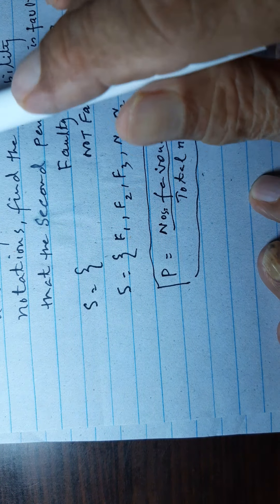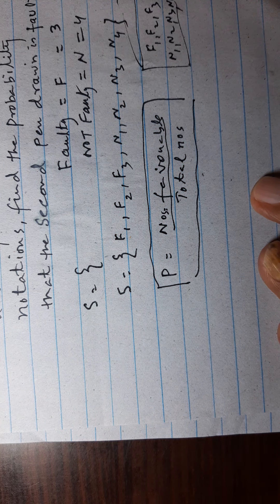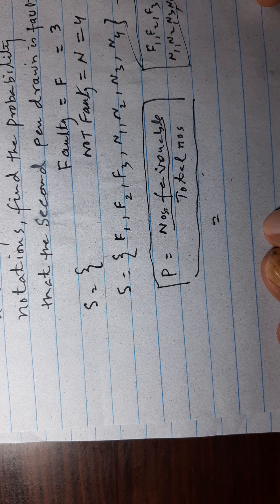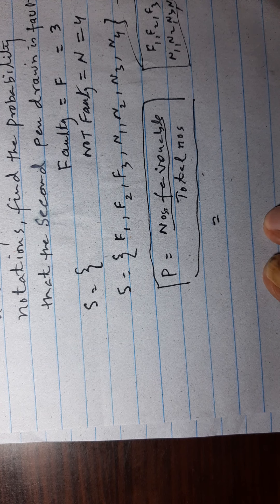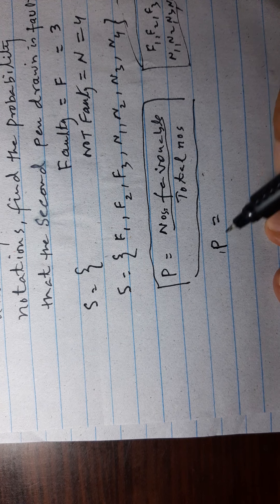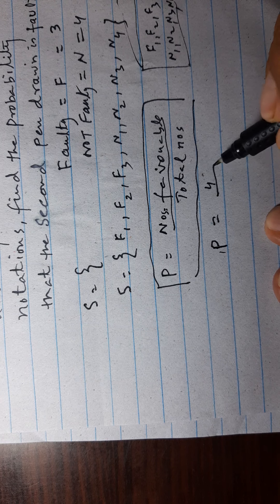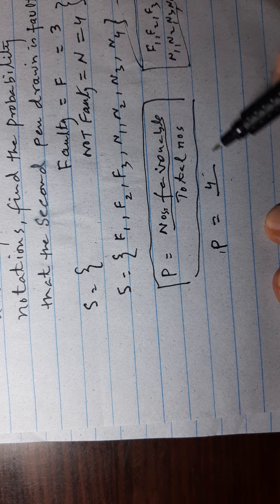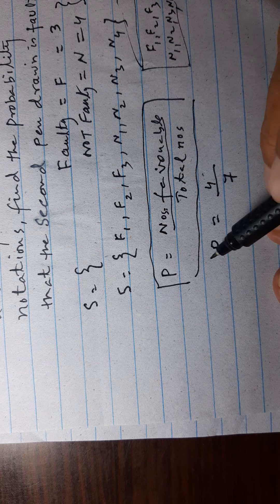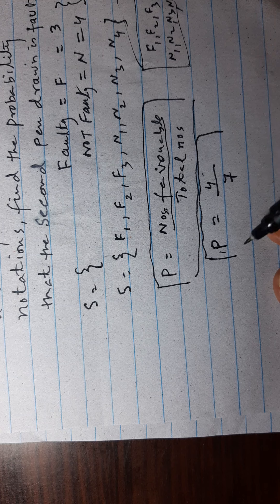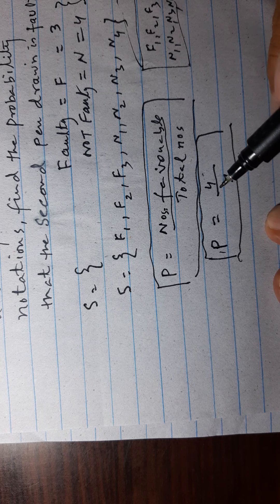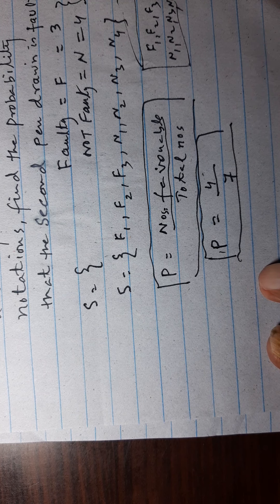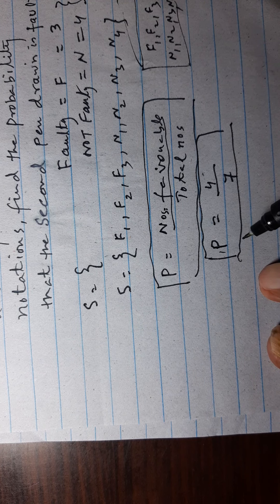Find the probability that the pen drawn is not faulty. Here, N1, N2, N3, N4 are not faulty. This is our favorable outcome. Then probability will be 4, and total pen is 7. Therefore, 4 over 7. This is the probability of not faulty pen.